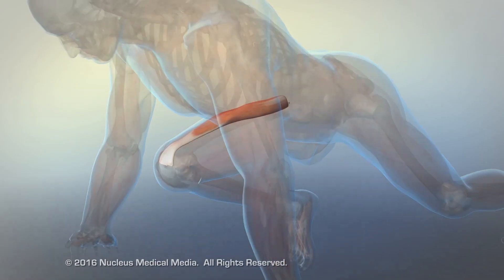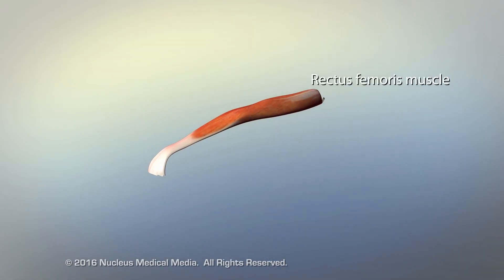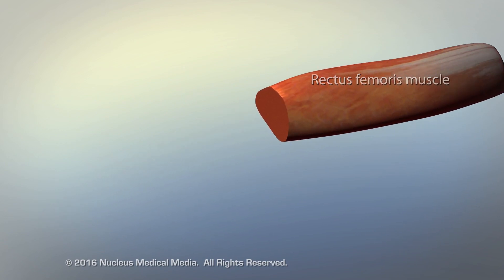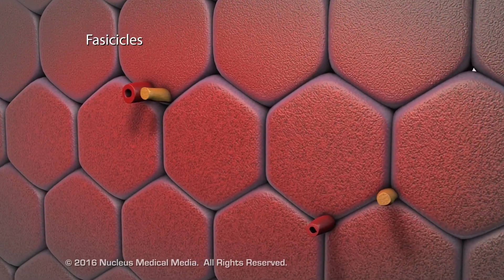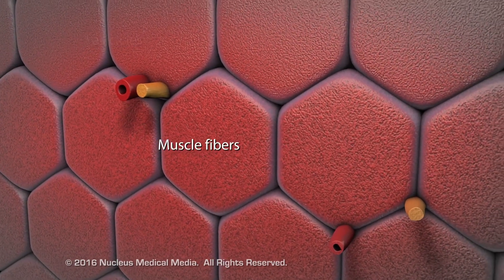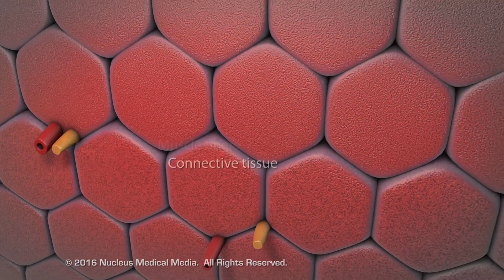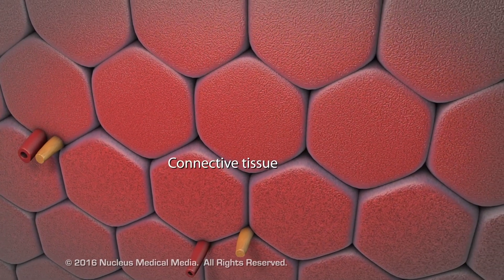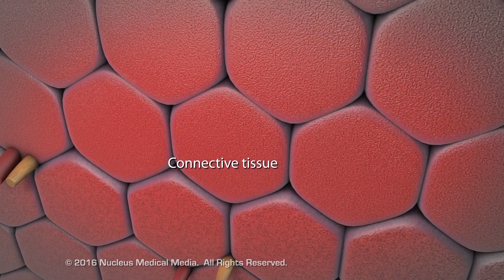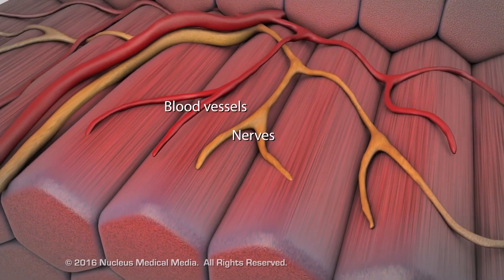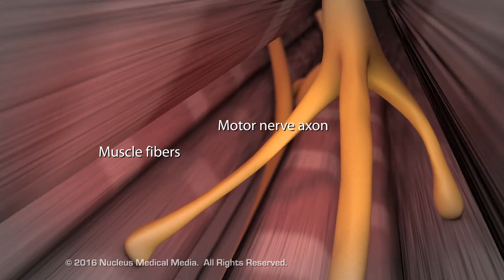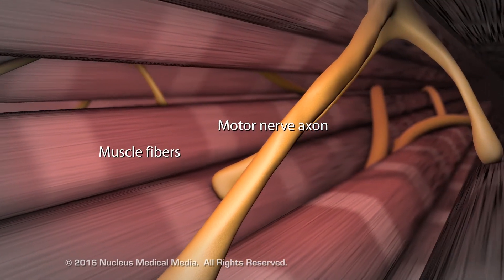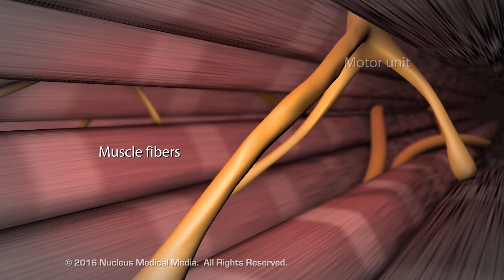Skeletal muscles are voluntary, controlled consciously by the nervous system, and are made up of fascicles, which are bundles of muscle fibers surrounded by connective tissue, blood vessels, and nerves. Motor nerve axons supply one or more skeletal muscle fibers, constituting a motor unit.